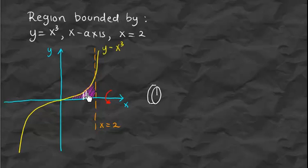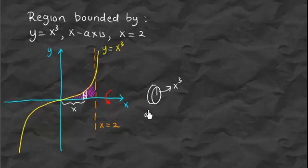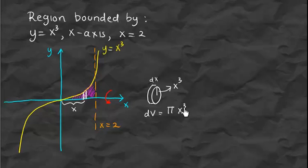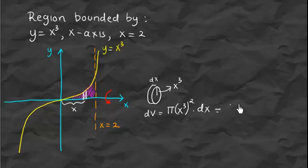The volume of the cylinder is the area times the thickness. The area of the base is a circle of radius x cubed (since the point is at position x). So the small volume dV equals pi times r squared times dx, which gives dV equals pi times x to the sixth times dx.